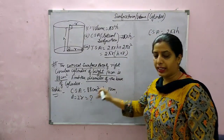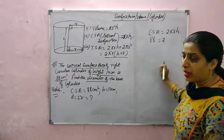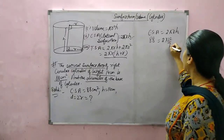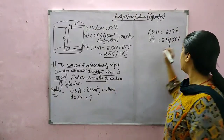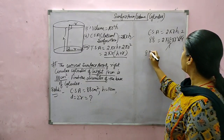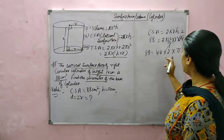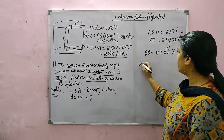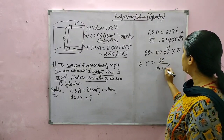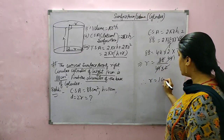CSA is given as 88. So 88 equals 2 times 22 by 7 (since pi is not mentioned, we take 22 by 7) times R times 14. This simplifies to 88 equals 44 into 2 into R. Shifting the value to the denominator: 88 upon 44 into 2. Therefore R equals 1 cm.